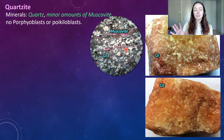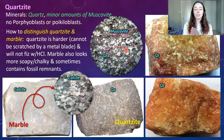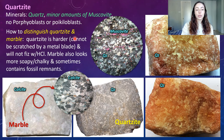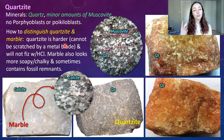I'll define porphyroblasts and poikiloblasts more clearly as we see examples in other rock types. Before moving on, I want to mention that if you have a hand sample of marble and quartzite, they may look similar and it can be hard to distinguish between the two. The easiest way to tell them apart without a thin section — because under thin section quartz and calcite look very different — is to test the hardness.